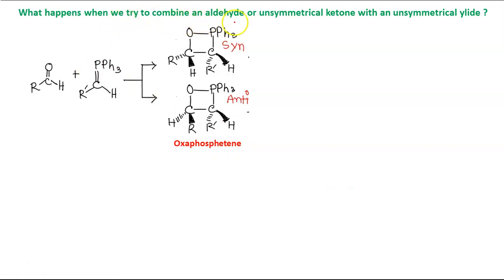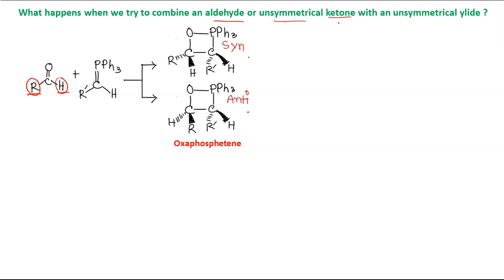What happens when we try to combine an aldehyde or unsymmetrical ketone with an unsymmetrical ylide? We have to take an aldehyde because on both sides we have two different groups — hydrogen and an alkyl group. If we take a symmetrical ketone, there is no question of stereoselectivity. So we must take either an aldehyde or an unsymmetrical ketone, and the ylide must also be unsymmetrical — the groups attached to the carbanion carbon must be different.